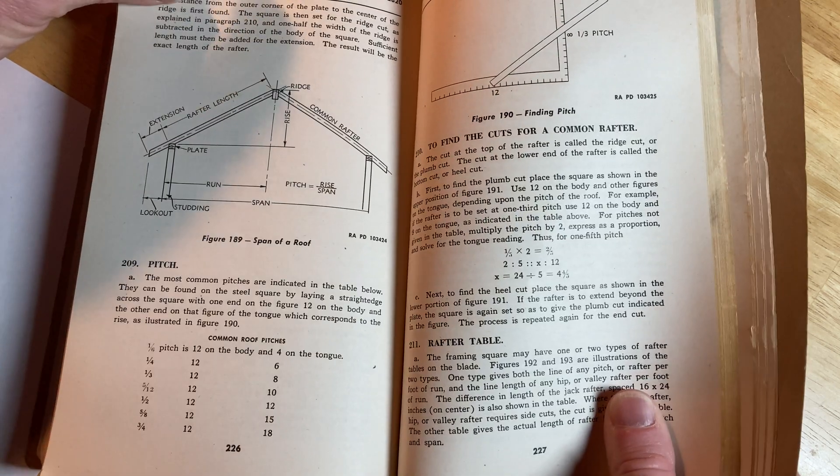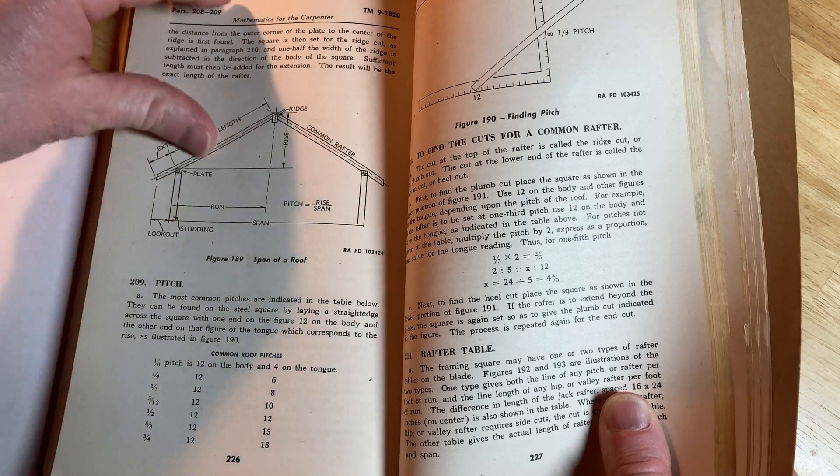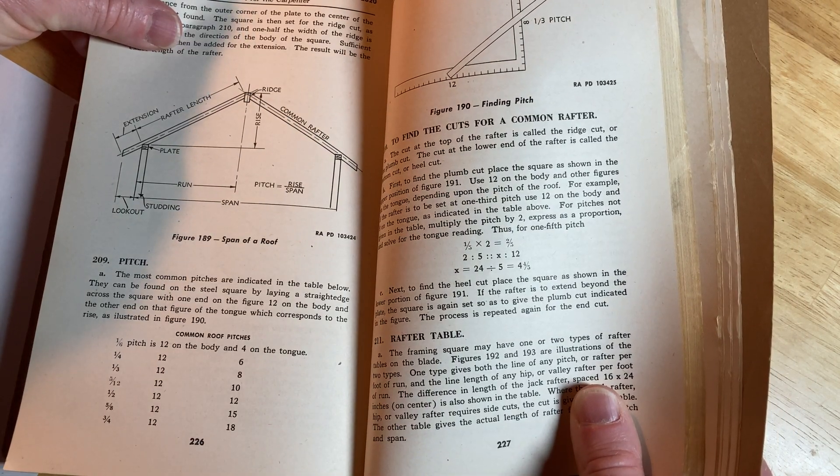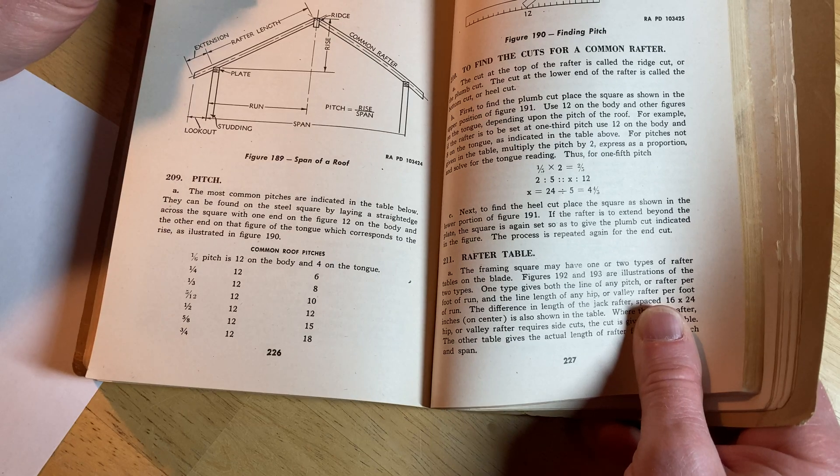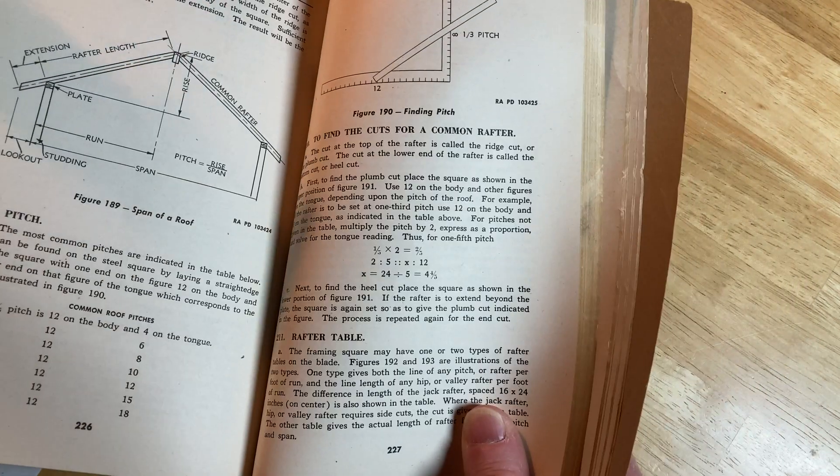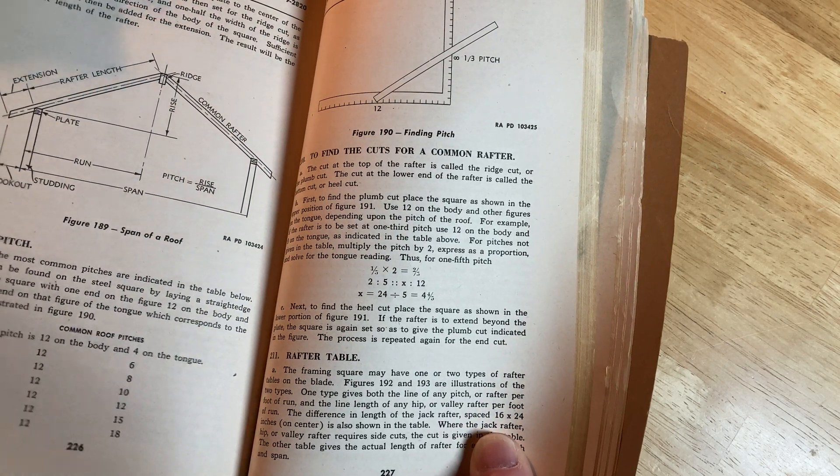Wow. Look at that. That's pretty cool. It's common rafter, rafter length, the ridge, the pitch is the rise over the span. Hmm. Common roof pitches. How to find the cuts for a common rafter.